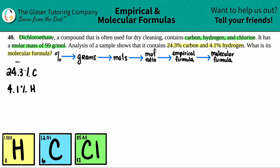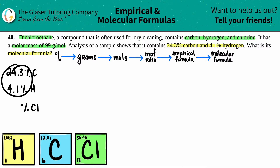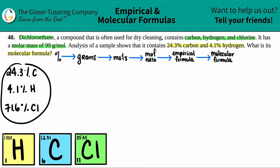They told us that we had 24.3% carbon and 4.1% hydrogen. But wait — if I add this up, this doesn't equal 100%, right? A percent always has to total 100%. They told us this compound contained three elements: carbon, hydrogen, and chlorine. They only gave us two percentages, so we have to find the percent of chlorine. We add up the given percentages and subtract from 100: 100 minus 24.3 minus 4.1 gives us a remainder of 71.6% chlorine. Now we have a total of 100%.